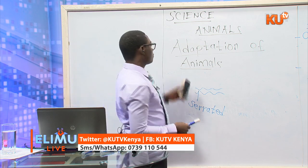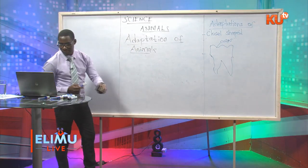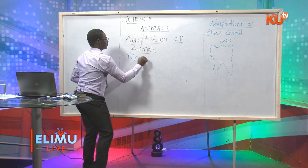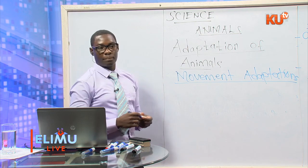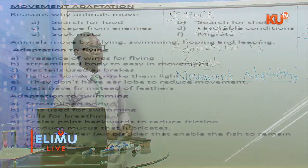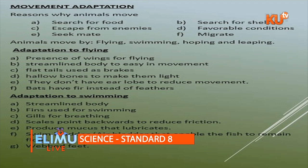Let's look at movement adaptations. Animals move from one place to another to search for food, to find a mate, to escape from enemies, to search for shelter, to look for favorable conditions, and to migrate. They move by flying, swimming, hopping, or leaping. Adaptations to flying include: presence of wings, a streamlined body for easy movement, and a flat tail used as brakes when the bird wants to stop while flying.